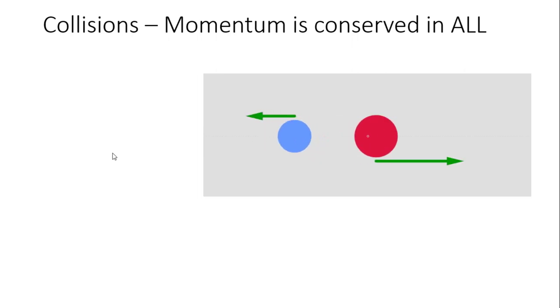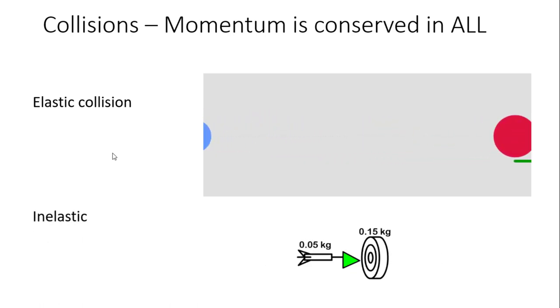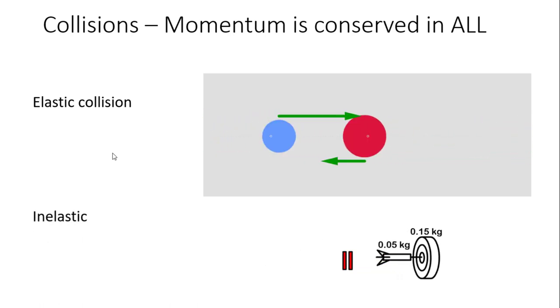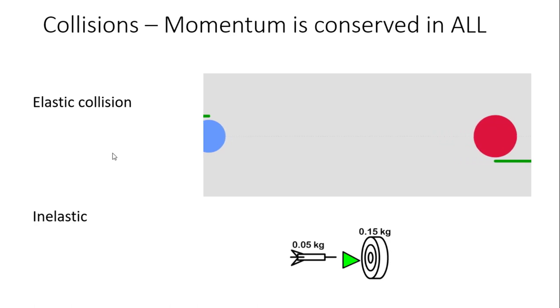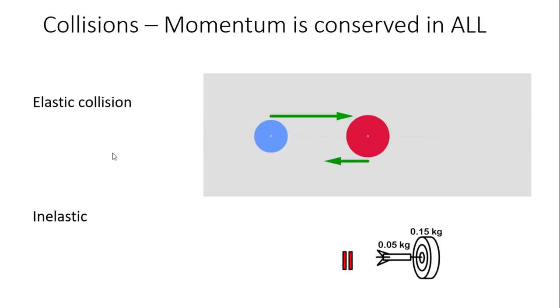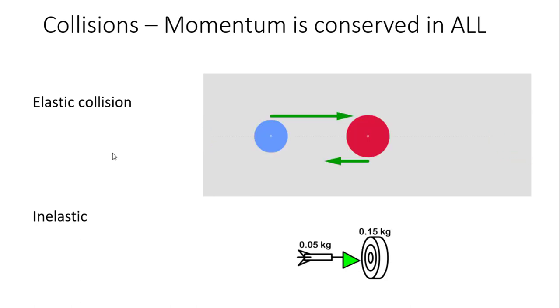And that is for elastic collisions like this one, where objects collide and bounce off of each other. And it's also true for inelastic collisions, which I think is the least intuitive. But basically if something collides with something and sticks, then the momentum is absolutely still going to be conserved. That's an inelastic collision.